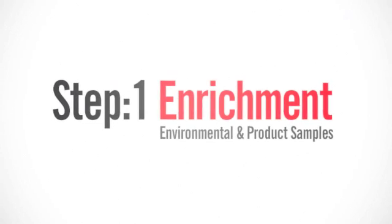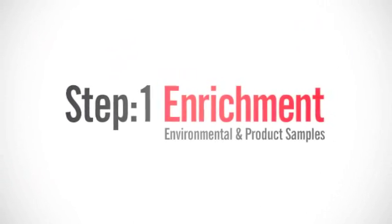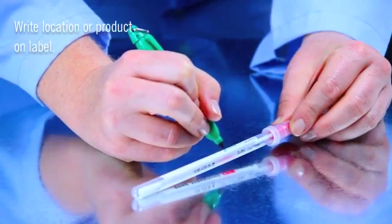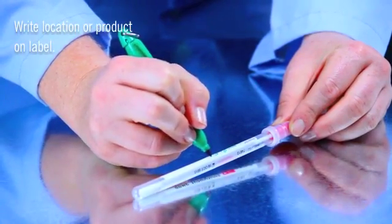MicroSnap is a two-step test. The first step is the enrichment step. Write the location or product on the swab tube label for easy identification.